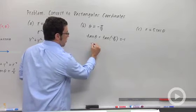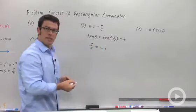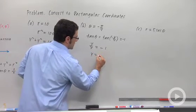And so remember that tangent theta is y over x, so y over x equals negative 1. And you multiply both sides by x, you get y equals negative x.